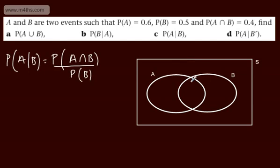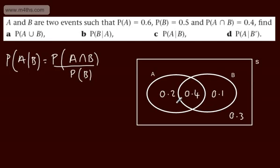Let's fill up our Venn diagram to make it clear. The intersection is 0.4. Probability of B is 0.5, so this side must be 0.1. Probability of A is 0.6, so this side must be 0.2. In total that gives 0.7, so the outside region is 0.3, since all probabilities must equal 1. Therefore, the probability of A union B is 0.7.